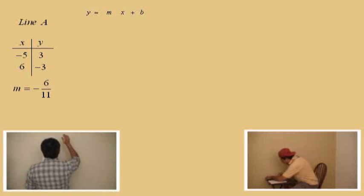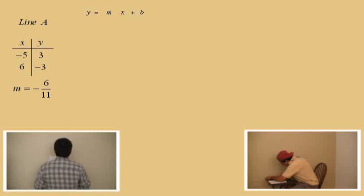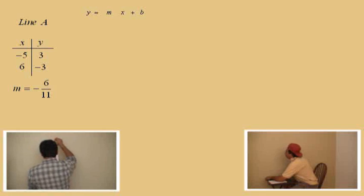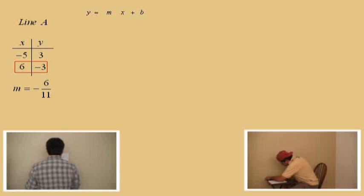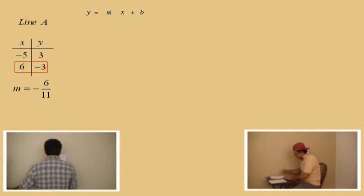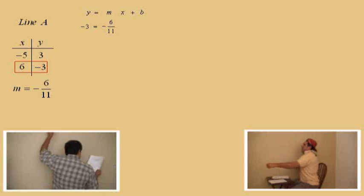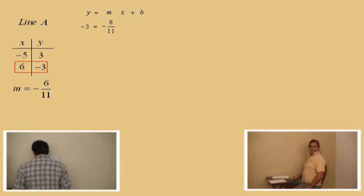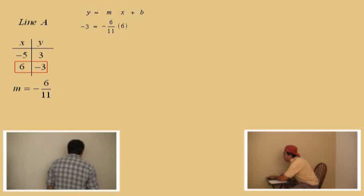Using the y equals mx plus b formula, we have the slope and we have to choose one of our points. I'm going to choose the bottom point: six, negative three. There's our point and our slope. What's the y value? Negative three. What's the slope, Charlie? Negative six over eleven. Very good. Now, what is our x value? Six. We can now solve for b. Charlie, we've got to solve this equation for b. To get rid of those fractions, we're going to multiply both sides by eleven.